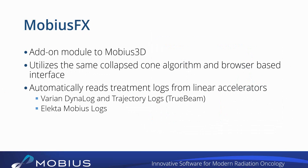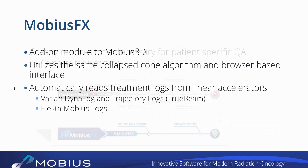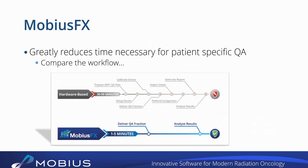That's Mobius 3D. Mobius FX is an add-on module to Mobius 3D that takes the idea to the next level. It utilizes the same collapsed cone algorithm and browser-based interface. Basically, Mobius FX will automatically read the treatment log files from linear accelerators — Varian Dynalog and Varian trajectory logs, and also an Electa log file that we worked with Electa to develop an interface for. The software pulls in all the information about what the machine did when it delivered your plan, and then recreates the delivery to determine in 3D what would actually be delivered to your patient.